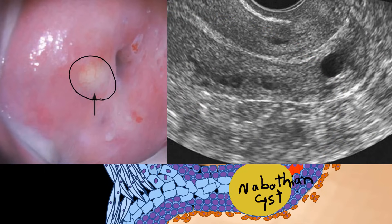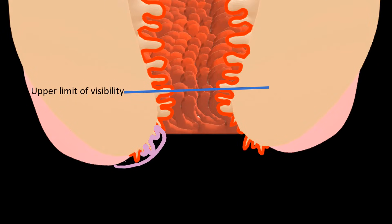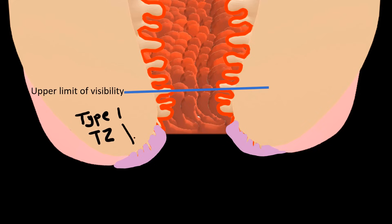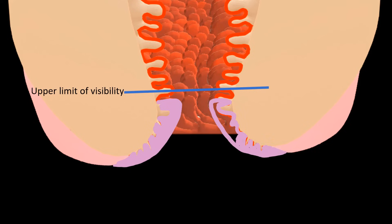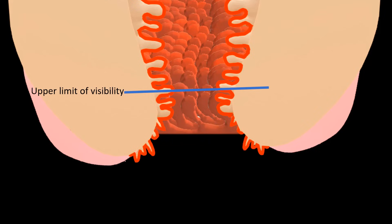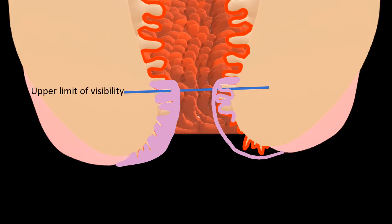During ultrasound examination, nabothian cysts look like well-defined anechoic rounded areas along the endocervical canal. Finally, there are three types of transformation zone. Type one: the transformation zone is completely ectocervical and fully visualized during colposcopic examination. Type two: the transformation zone has an endocervical component but is still fully visualized. Type three: the transformation zone has an endocervical component and the upper limit of the transformation zone is not visualized during colposcopic examination.